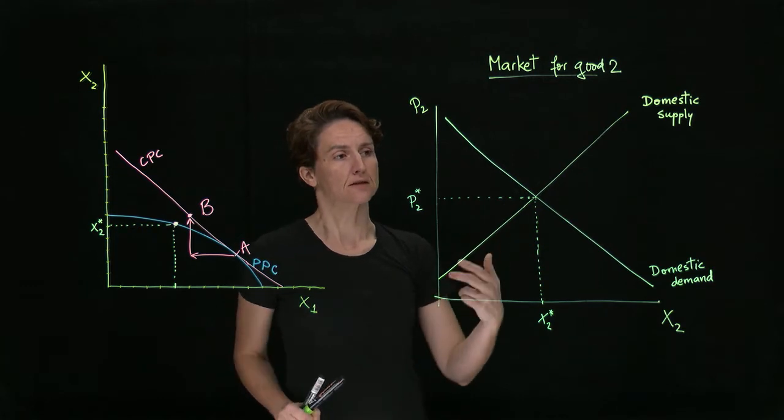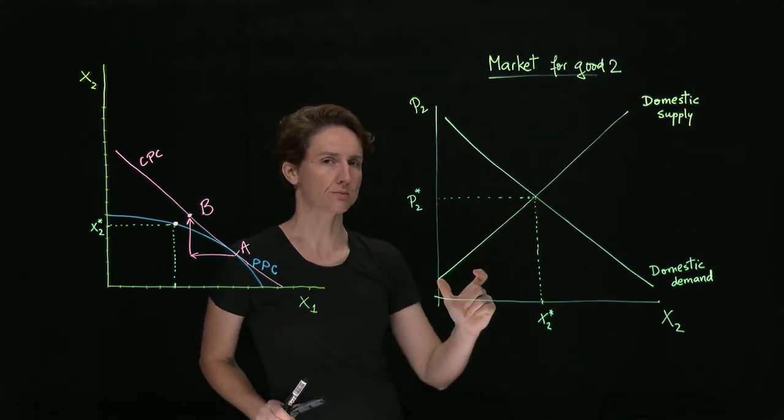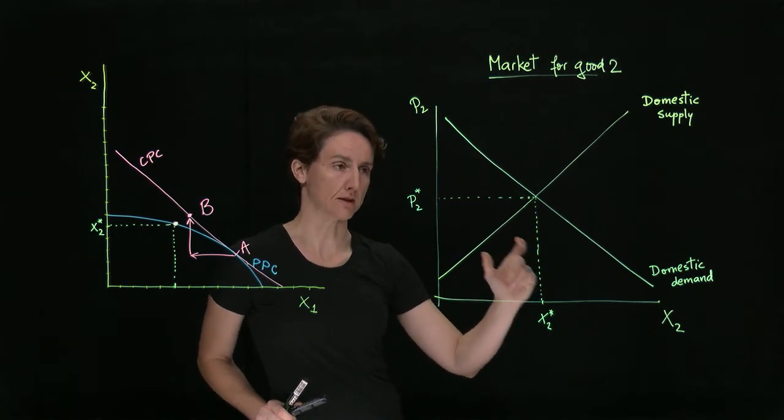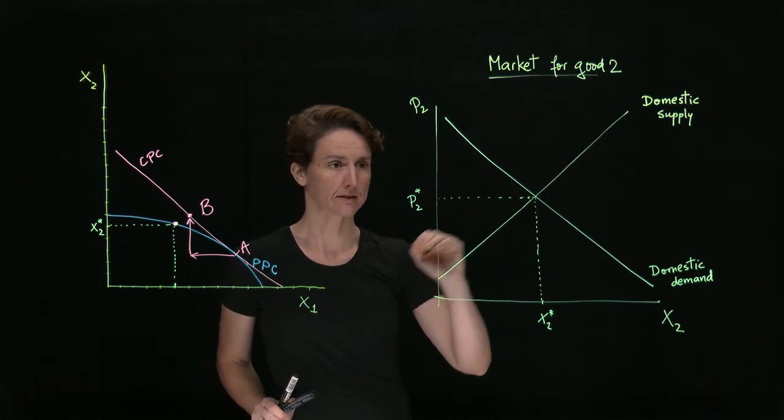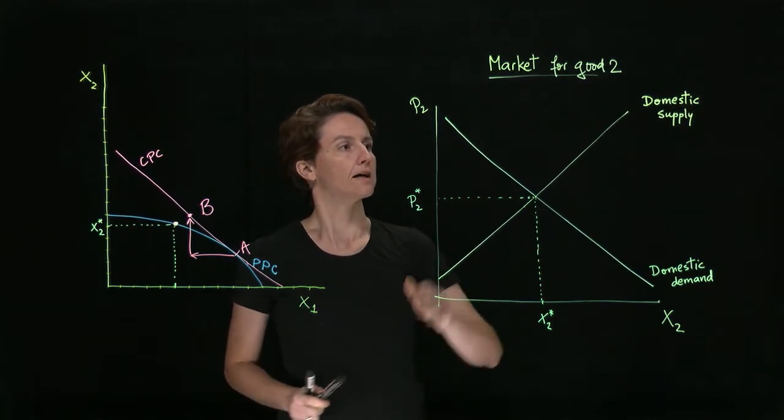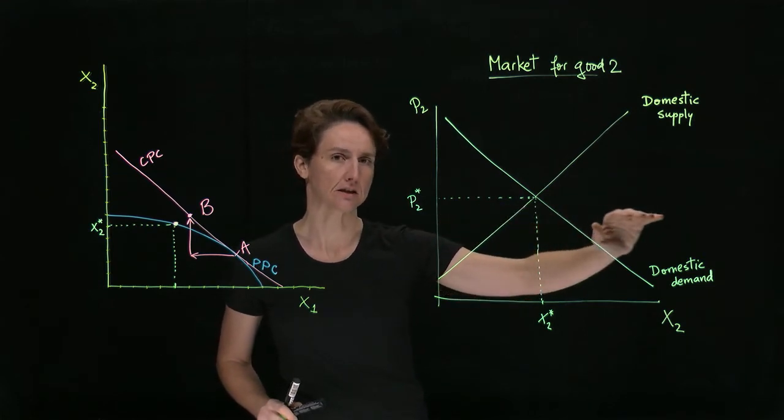Now, if the country opens up to trade and good 2 is available at a cheaper price on international markets, the way we could show that here is to add foreign supply as being perfectly elastic at that international price.